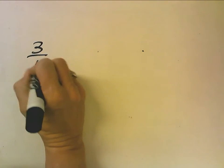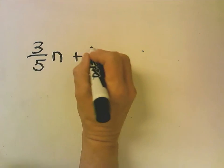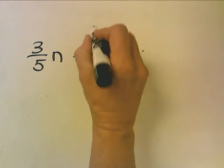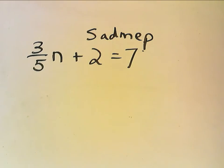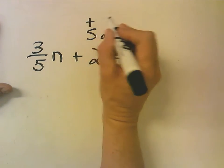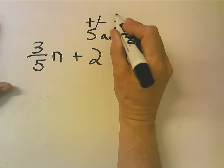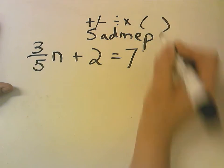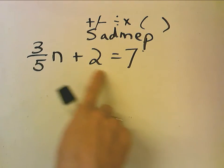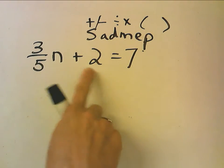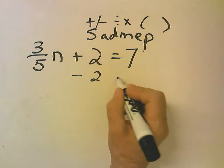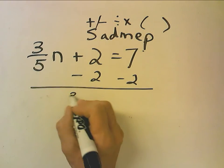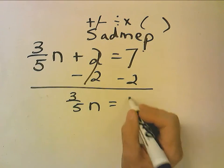Now let's look at number 2. We have 3 fifths times n plus 2 equals 7. Now I'm going to follow the SADMEP rule. The SADMEP rule says to undo an equation, first we do addition and subtraction, division and multiplication, and last step, parentheses. So I look for an opportunity to add or subtract. n is being multiplied by 3 fifths, but it's being added by 2, so I'm going to undo addition first.